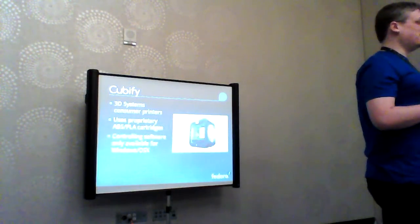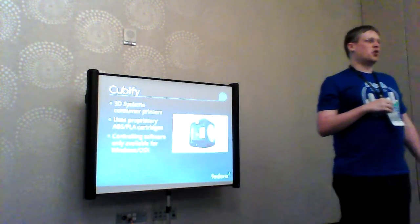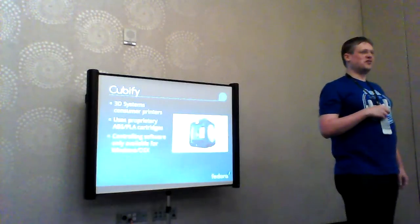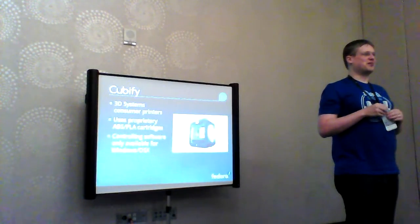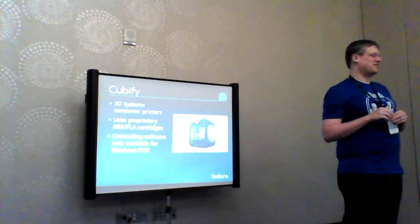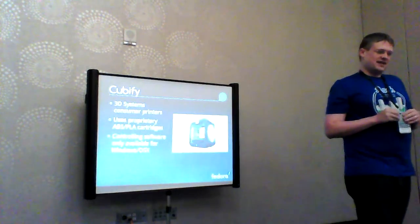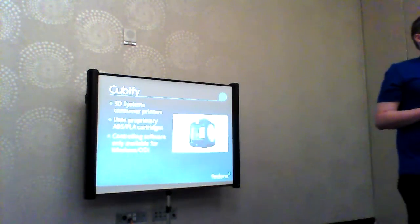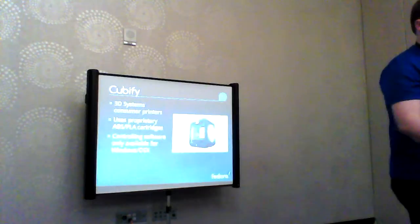Cubify is the consumer printer that 3D Systems makes. It uses proprietary filament cartridges — it literally checks a DRM signature in the cartridge to ensure you've put in an authorized one. The controlling software is only available for Windows and Mac. Some people have bought Cubify printers on discount and spent months hacking all the nonsense out of them — so many parts changed that they probably would have been better off just building a RepRap. This is the printer sold at Staples.